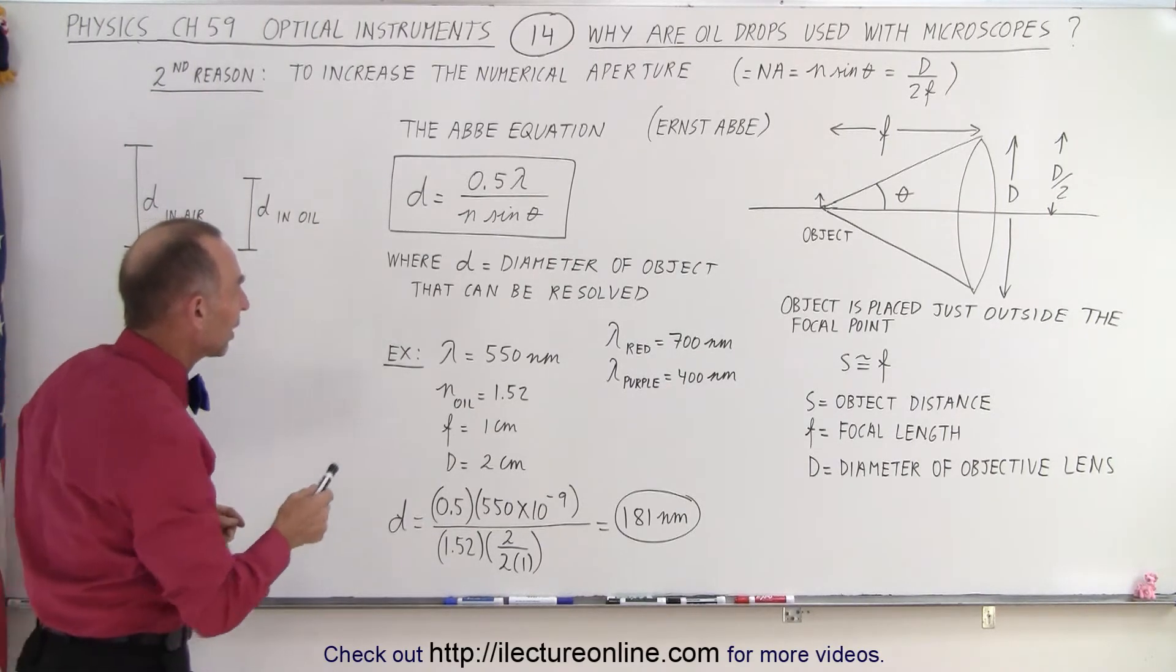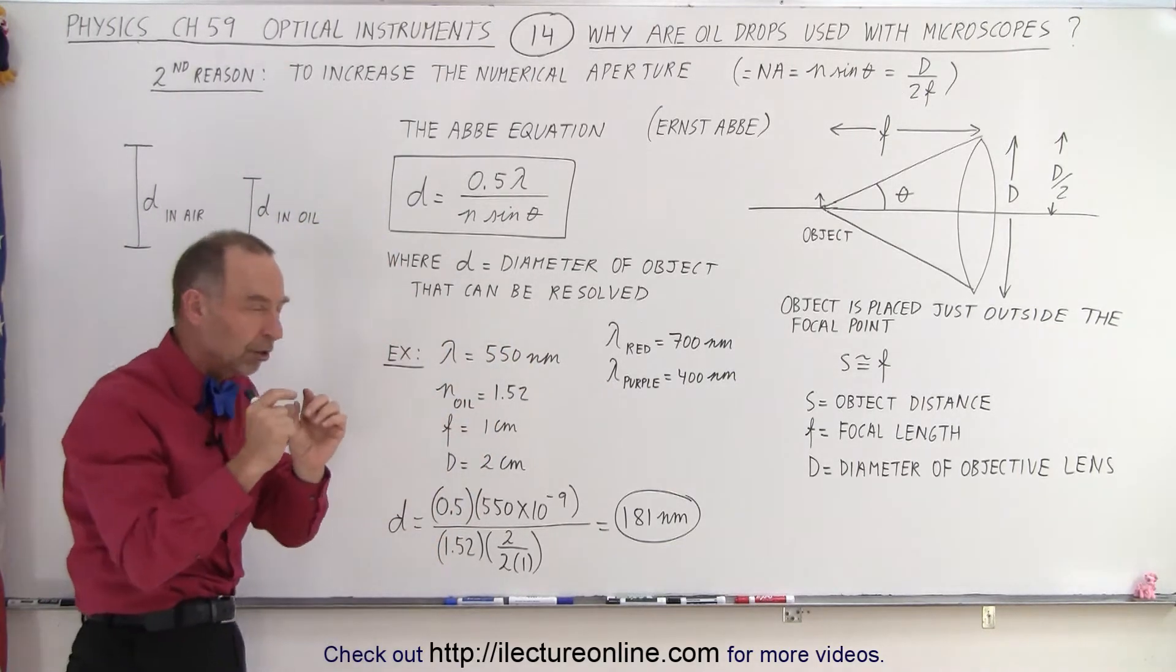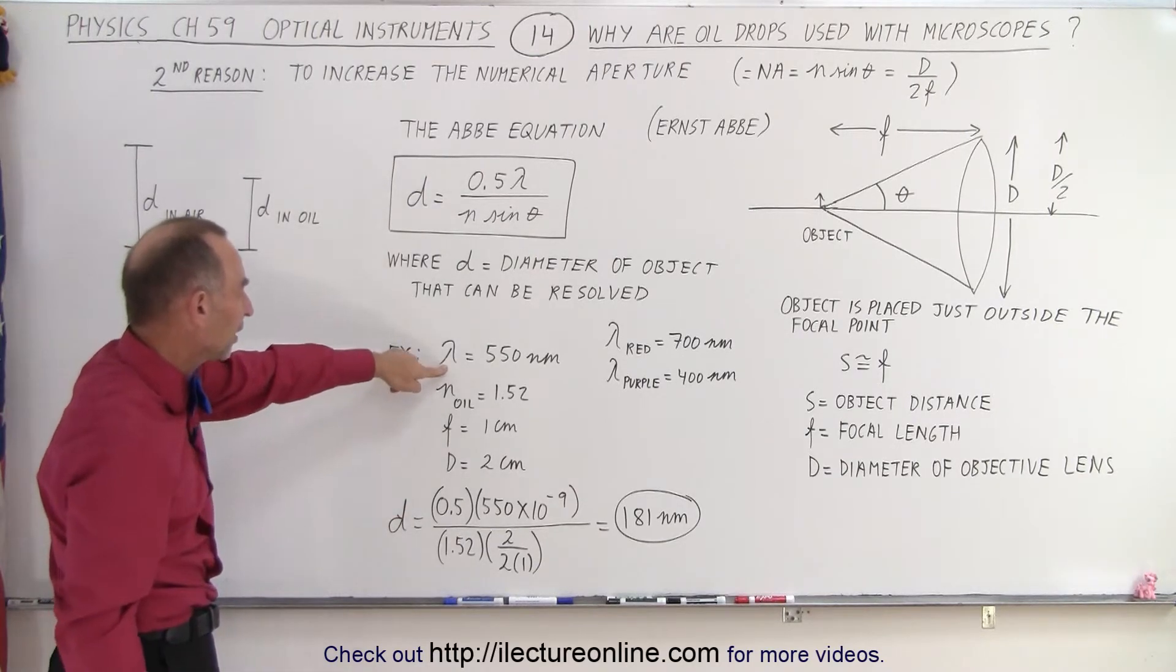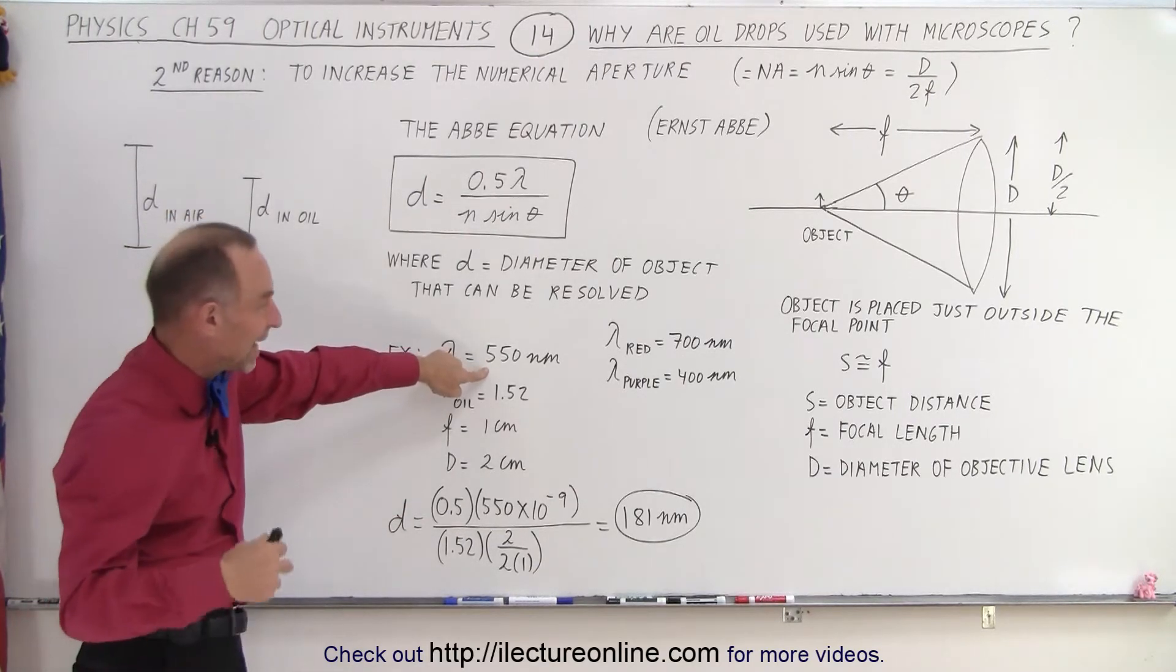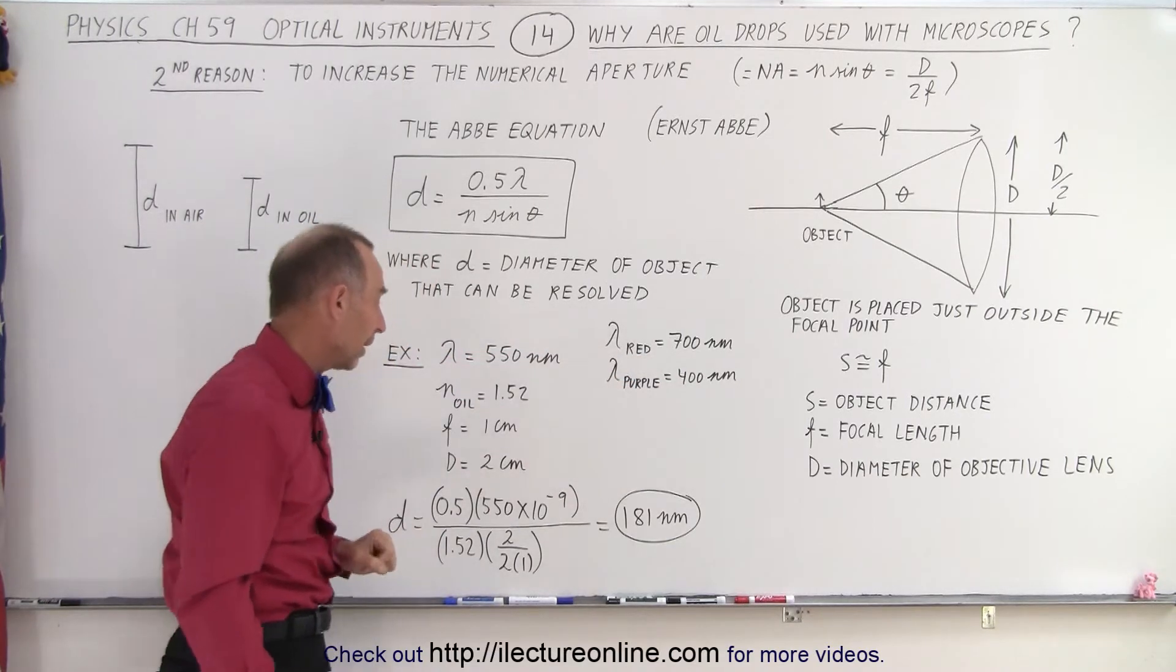So here notice that d is the diameter of the object that can be resolved. We're looking for the smallest object possible that can be resolved and as an example, let's say that we're using a wavelength of 550 nanometers, which is the average between 700 for red light and 400 for purple light.